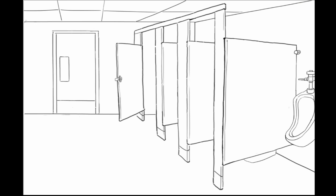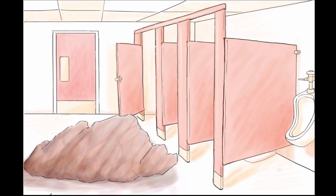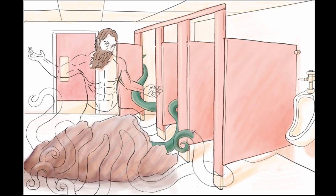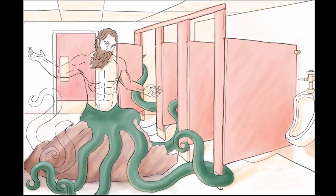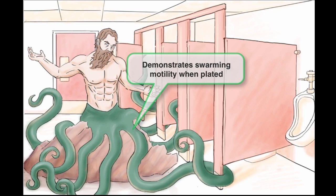Let's start out by drawing the restroom. Notice we're using a lot of light reds because Proteus is gram-negative, and here's Proteus. We're making him half man and half octopus because when Proteus is plated it's said to demonstrate swarming motility, so his swarming tentacles will remind you of Proteus's swarming motility.